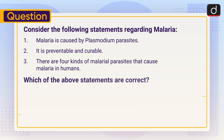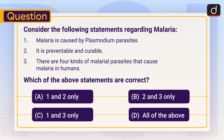Consider the following statements regarding malaria: 1. Malaria is caused by Plasmodium parasites. 2. It is preventable and curable. 3. There are 4 kinds of malaria parasites that cause malaria in humans. Which of the above statements is or are correct? A. 1 and 2 only. B. 2 and 3 only. C. 1 and 3 only. Or D. All of the above. Send the answer of this question in the comment section.